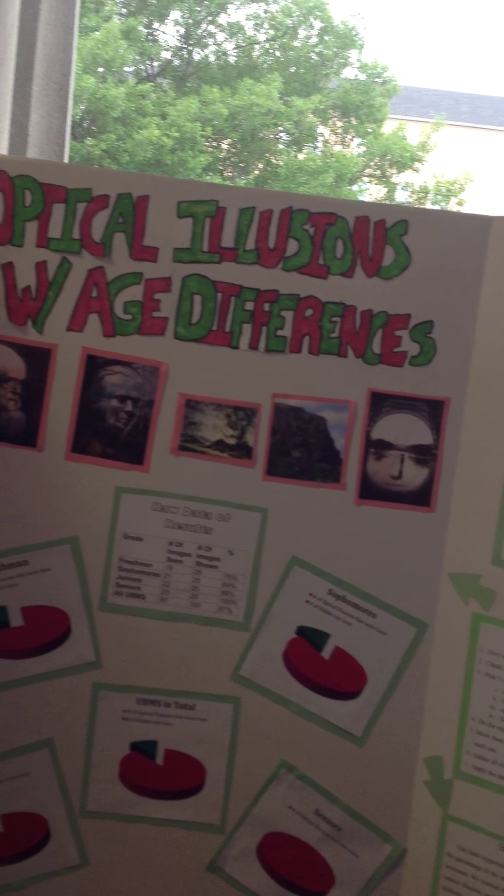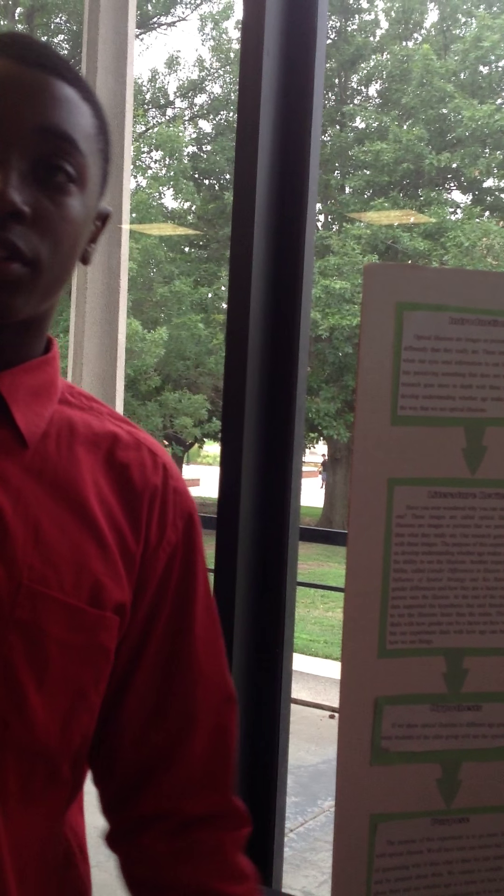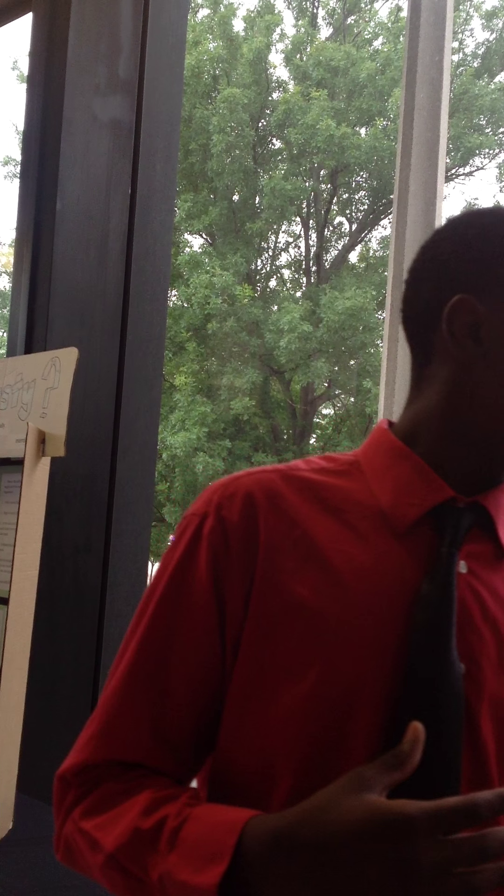We qualified participants from each of the classes, and then we found five from each group, one at a time. We showed them one image for three seconds. After the three seconds, the image was taken away and we recorded what they saw, then applied the results to our charts.